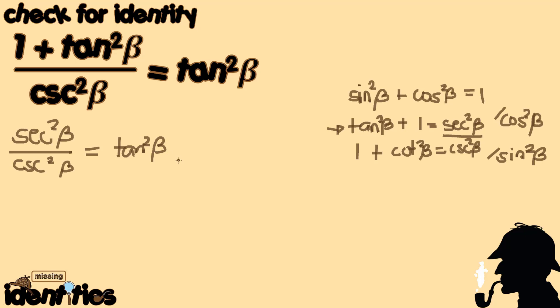This is now a simpler form of the original, but we still need to verify whether the left-hand side when simplified results in tangent squared beta. We are going to manipulate only the left-hand side, since it's more complicated than the right-hand side which is already tangent squared beta. We can do that by giving equivalent forms in either sine, cosine, or a combination of both.